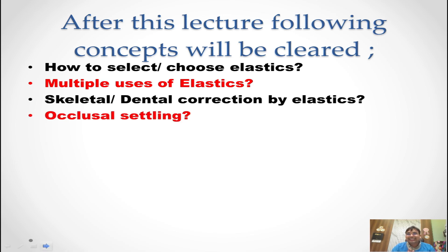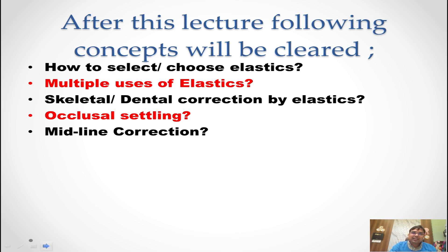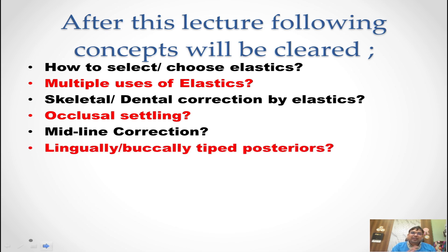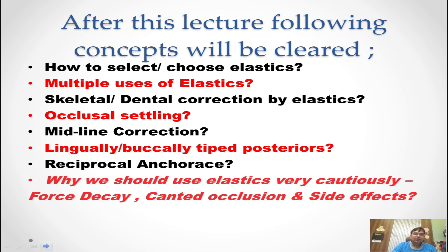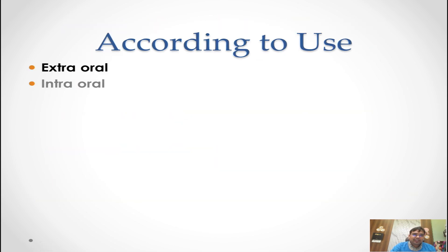Usually we are able to do only dental corrections, which we should use very judiciously. Occlusion settling is routinely done by elastics and midline correction usually occurs due to anchorage loss. How do we use elastics, and lingually and buccally tilted procedures are best corrected by reciprocal anchorage and elastics. So why we should use elastics — very cautiously, very carefully — and what is the force decay? It may cause occlusal canting, and there are multiple side effects of elastics.